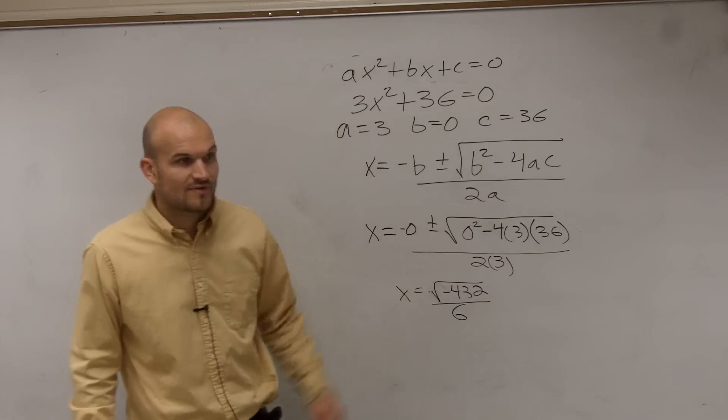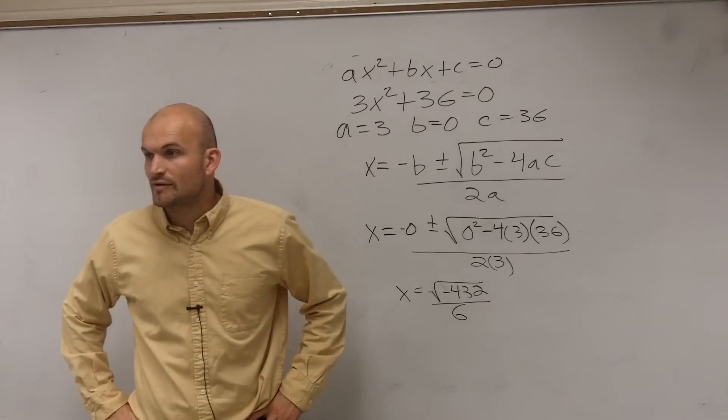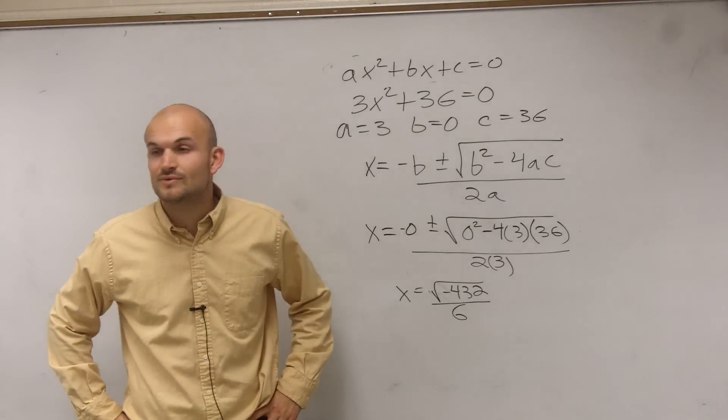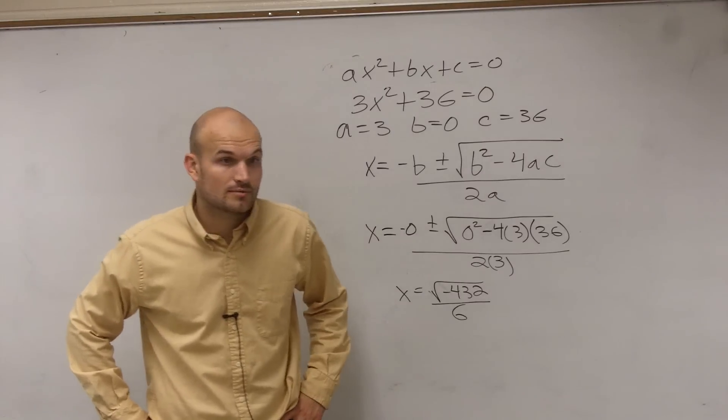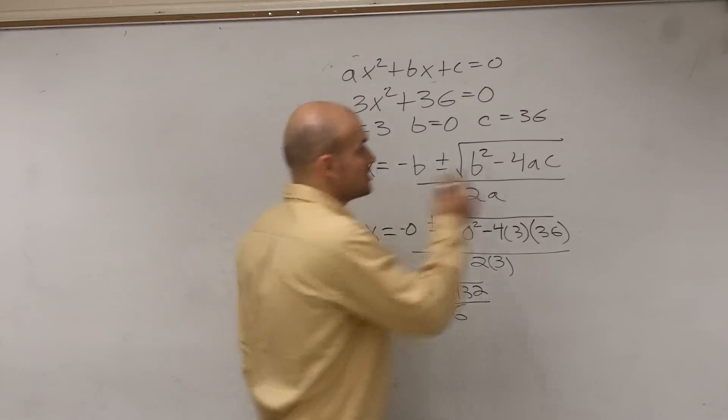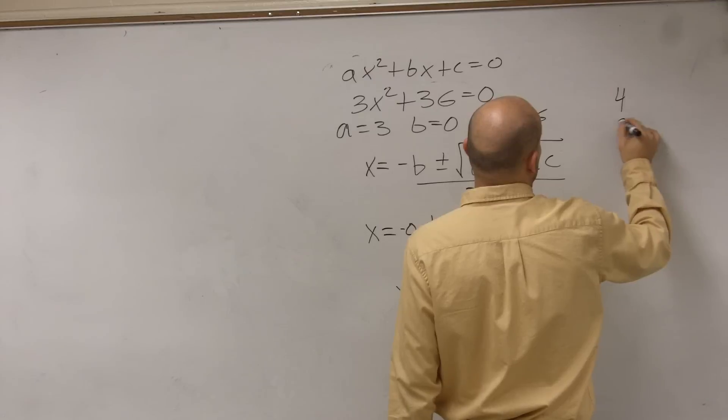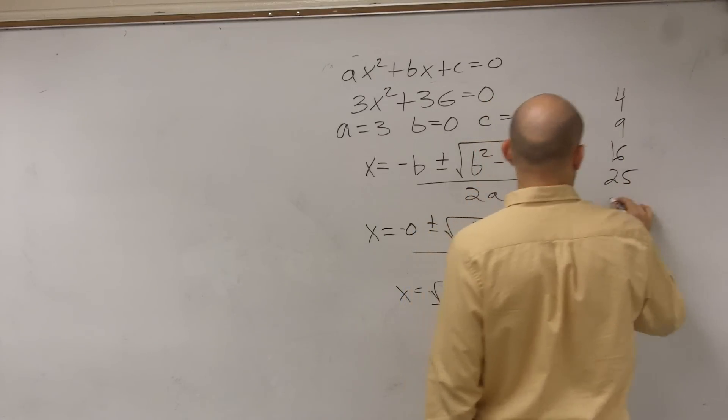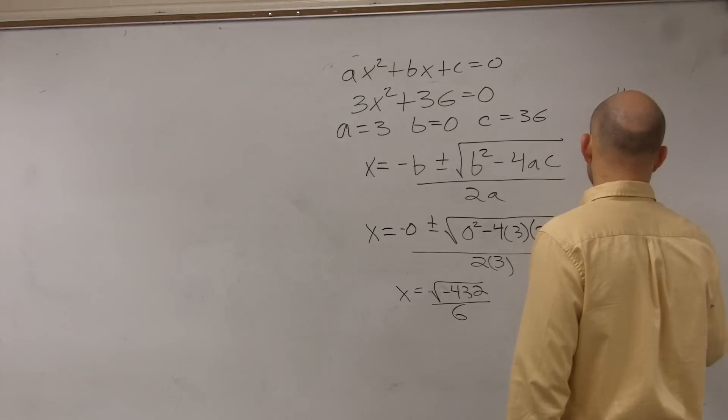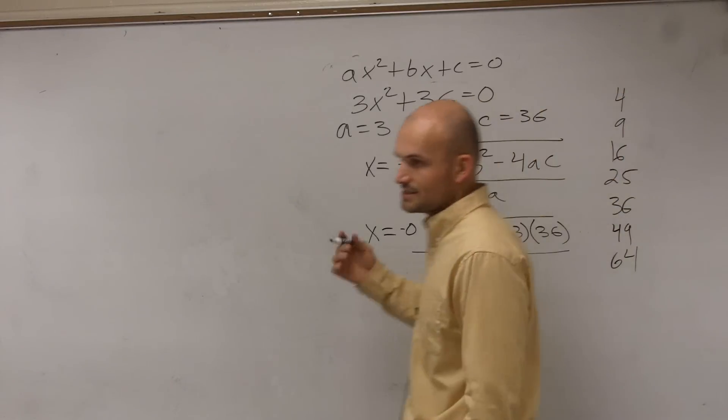Now, can we simplify the negative 432? Do we have a square number that divides into negative 432? Let's pick out our square numbers. Our square numbers, we have 4, 9, 16, 25, 36, 49, 64, and so on.